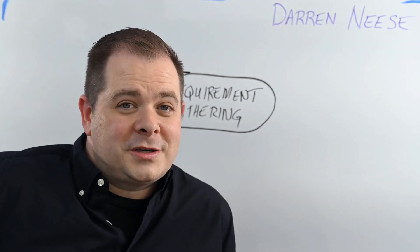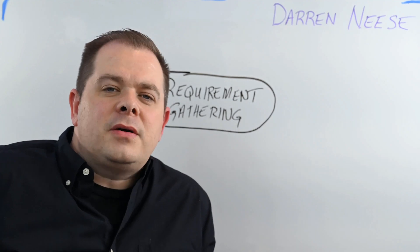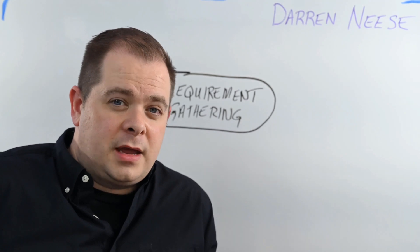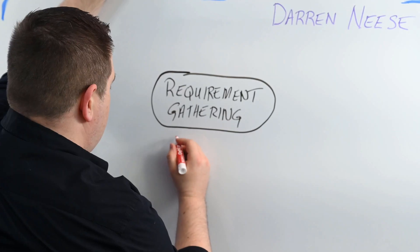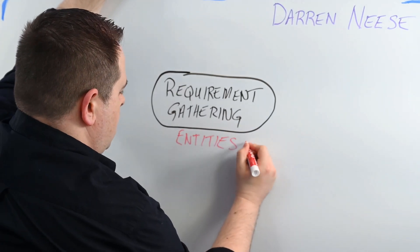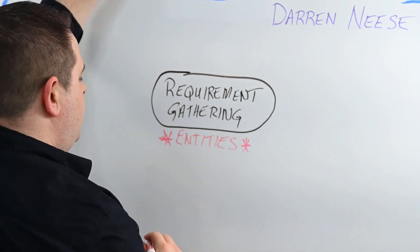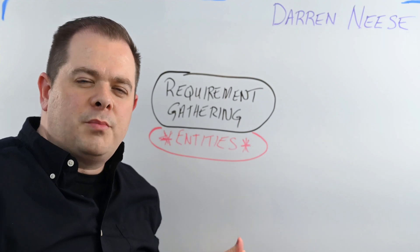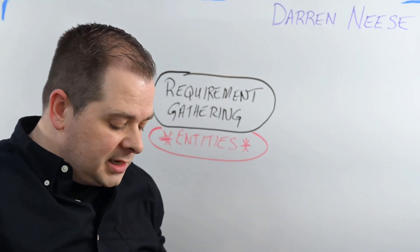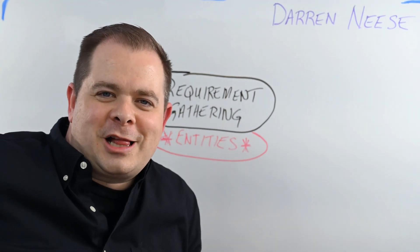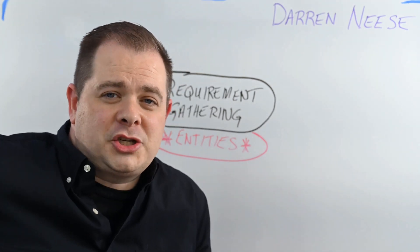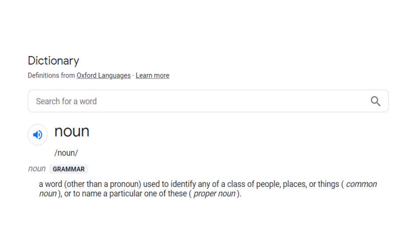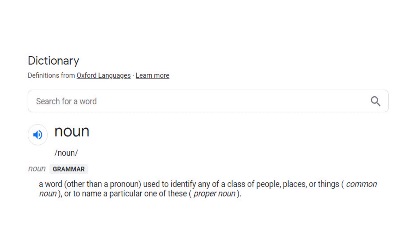What I have found key in gathering requirements for a future project is you identify the entities that your system will need to work with. Identifying and defining those entities is of the utmost importance when gathering requirements. What is an entity? Let's use an example. As I read off this paragraph of information about the garage work order system, identify the nouns. A noun is a person, place, a thing, or idea.